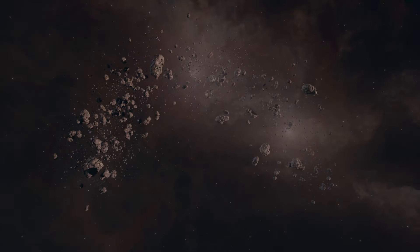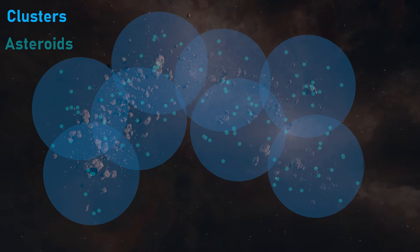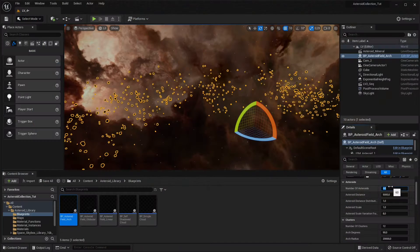Basically, each cluster contains the asteroids, and the clusters are the centers where the actual asteroids are scattered around. In the same way, clusters are scattered around the asteroid field.